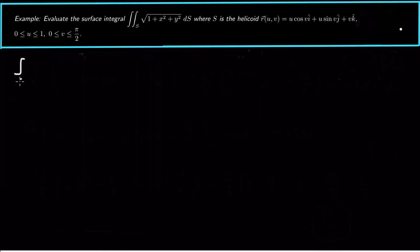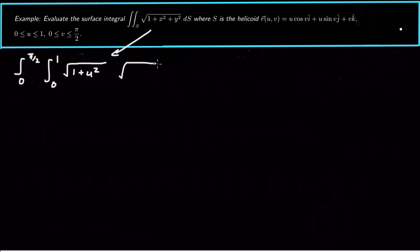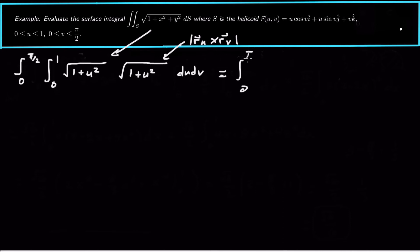Setting up our integral: we integrate from 0 to π/2 for v, and 0 to 1 for u. The integrand is √(1 + u²) from the function, multiplied by the cross product magnitude √(1 + u²). Those square roots combine nicely, giving the integral from 0 to π/2 of the integral from 0 to 1 of (1 + u²) du dv.